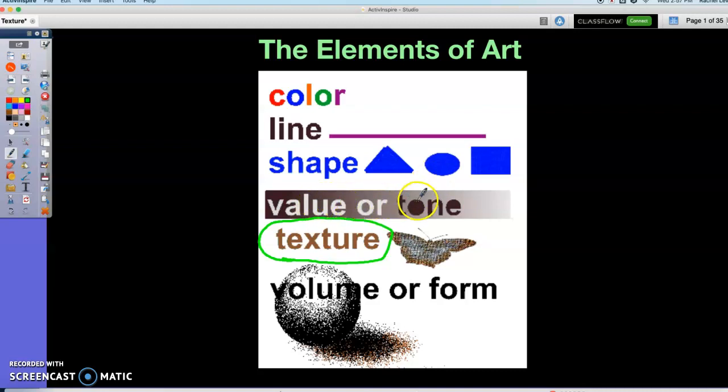Value or tone is the lightness or darkness of a color. So if you add white to a color, it makes it lighter, and if you add black, it makes it darker.